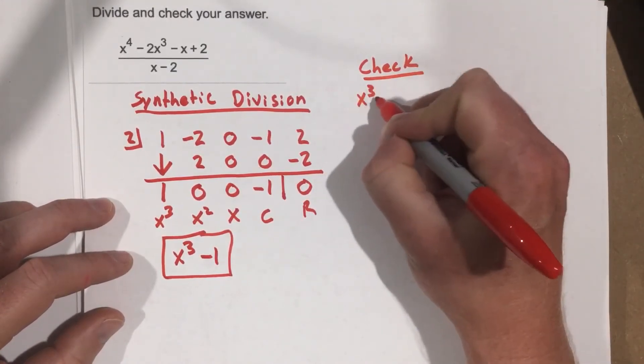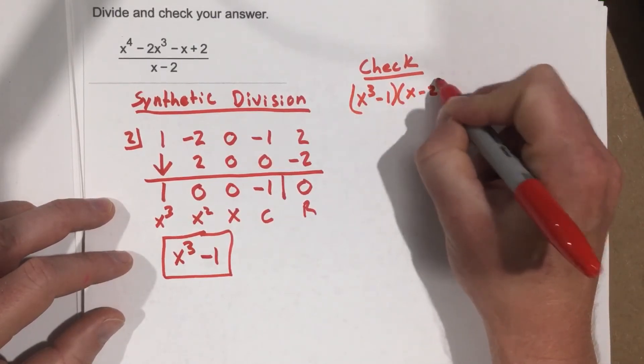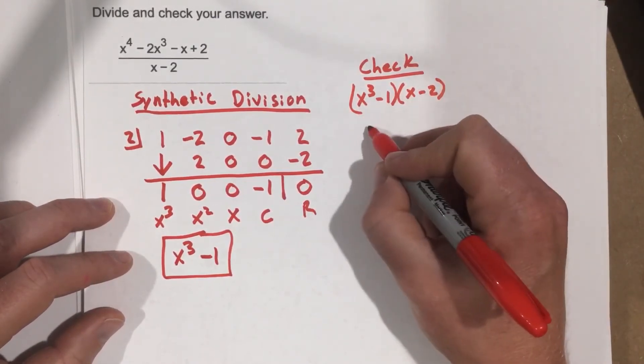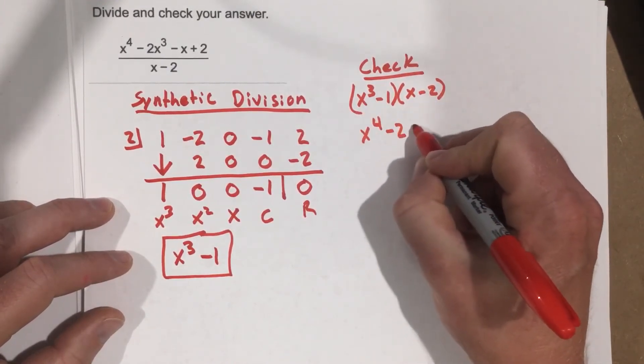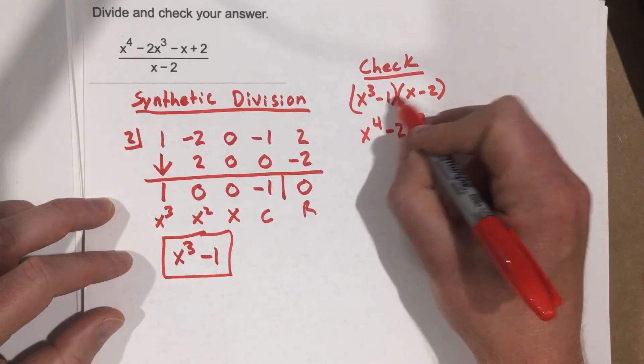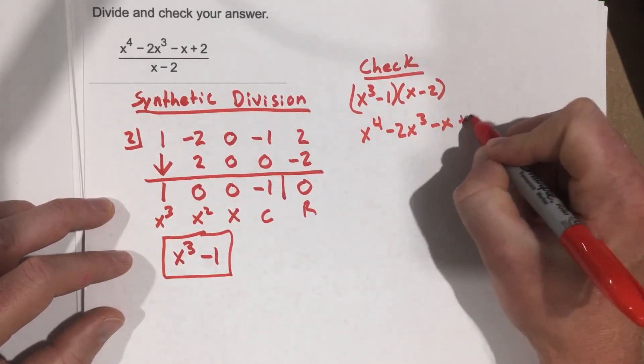We're going to take x cubed minus 1, multiply it times x minus 2. x cubed times x is x to the 4th. x cubed times negative 2 is minus 2x cubed. Negative 1 times x is minus x. Negative 1 times negative 2 is plus 2.